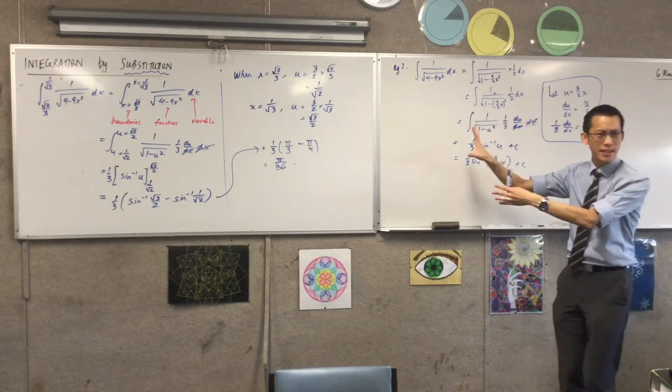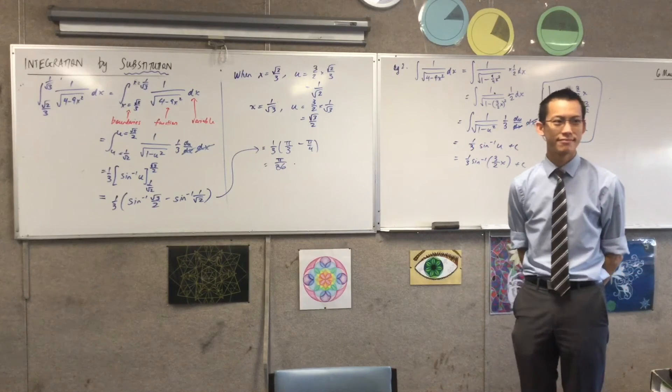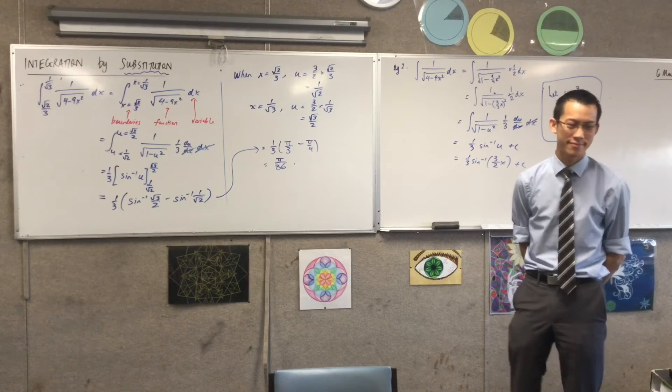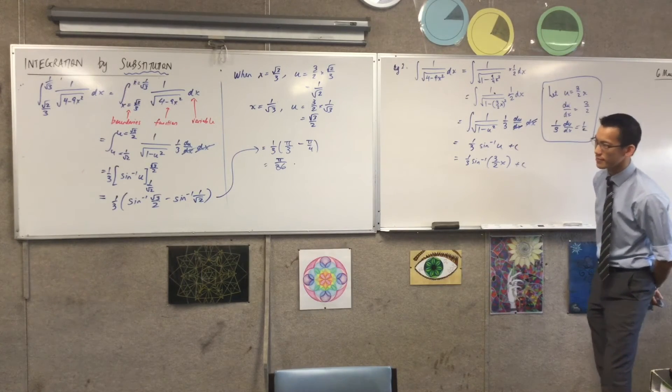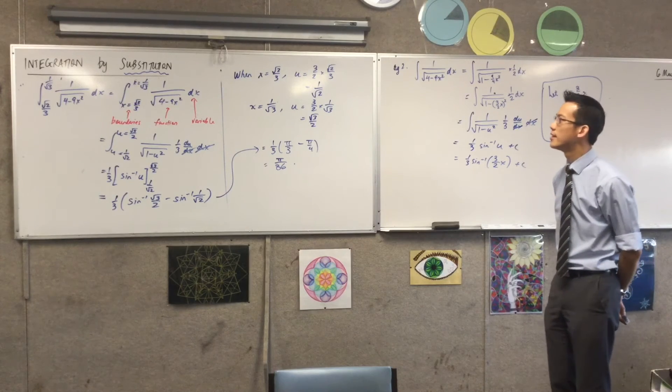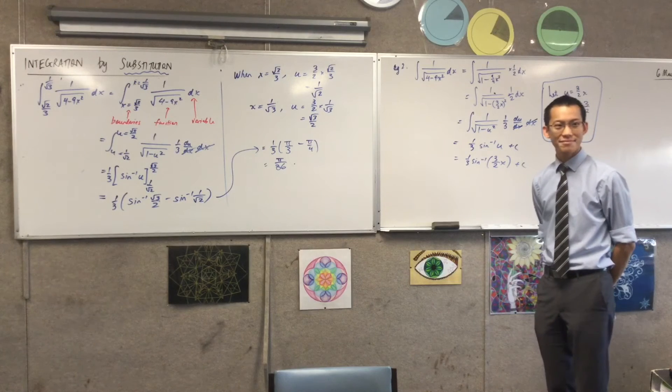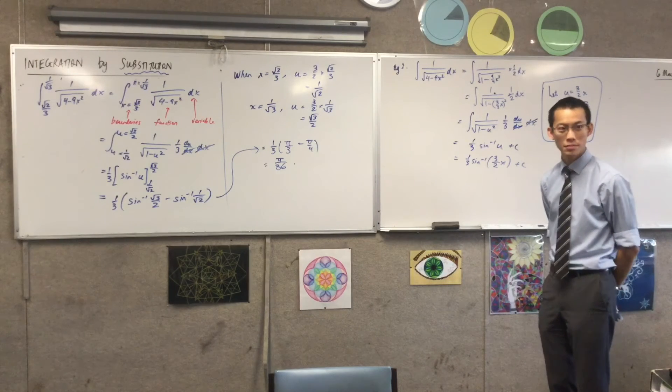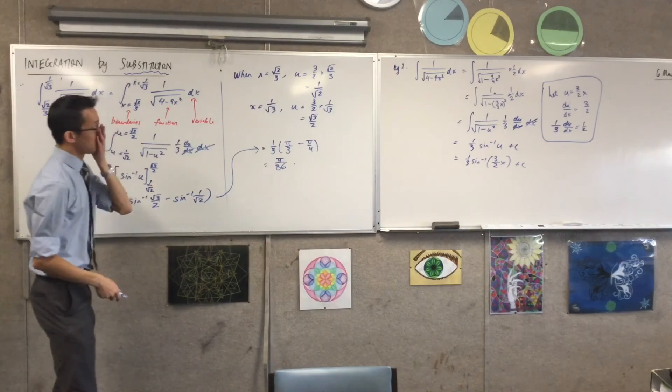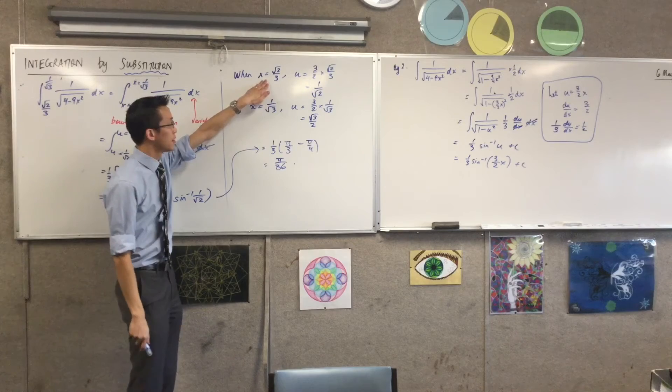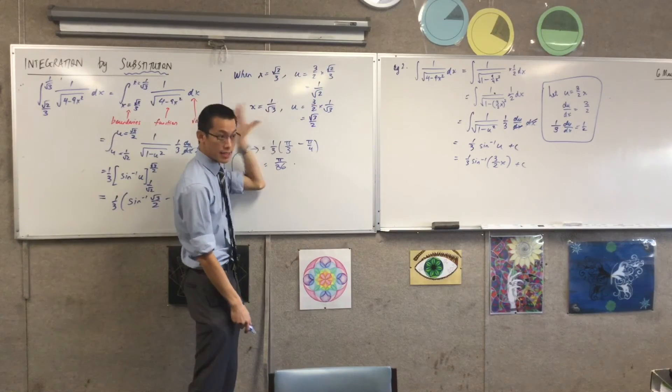Does that make sense? Any questions? What if you had a sign? So then if the bottom - so if like right now for the x boundaries it's like smaller to bigger, but then in u if it goes bigger to smaller, do you need the negative sign? That's a great question.